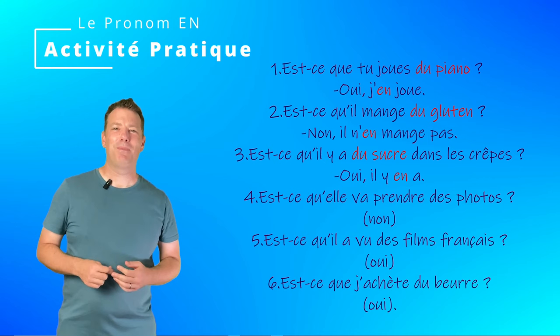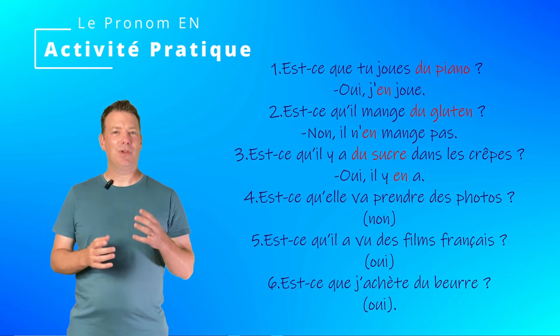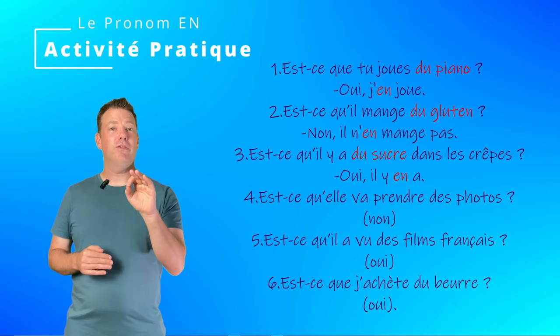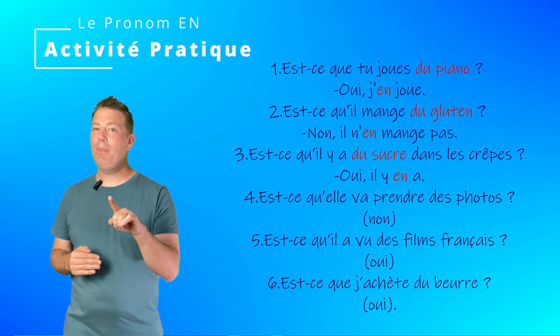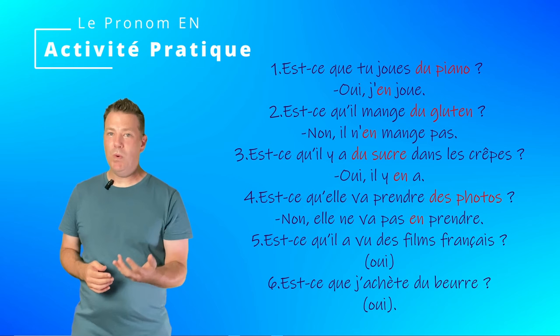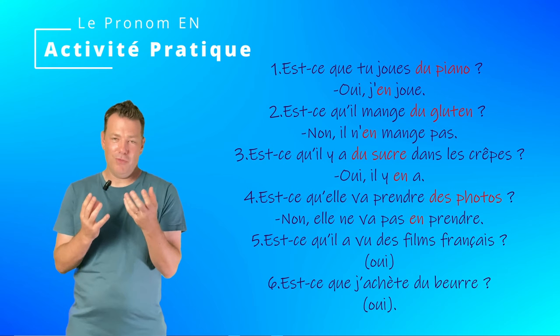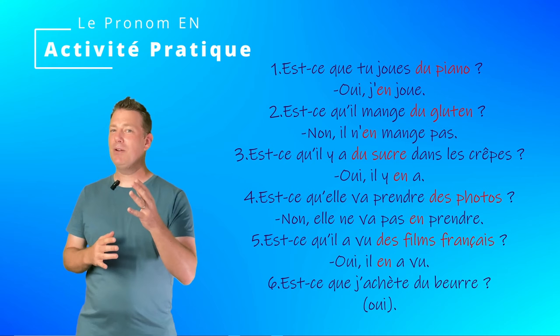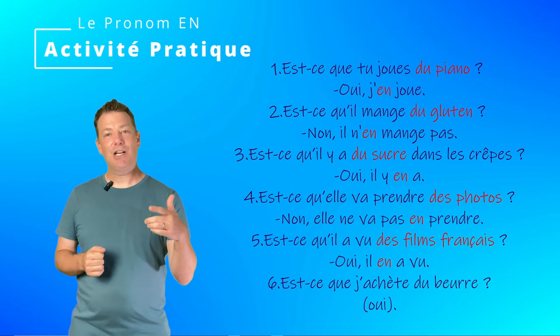Numéro 4: Est-ce qu'elle va prendre des photos? Answer negatively — this is an infinitive construction (near future), so EN comes right in front of the infinitive: Non, elle ne va pas en prendre. Numéro 5: Est-ce qu'il a vu des films français? Oui, il en a vu — in the passé composé EN goes before the auxiliary. Numéro 6: Est-ce que j'achète du beurre? Imperative: Achète-en — remember to add the S for the liaison.